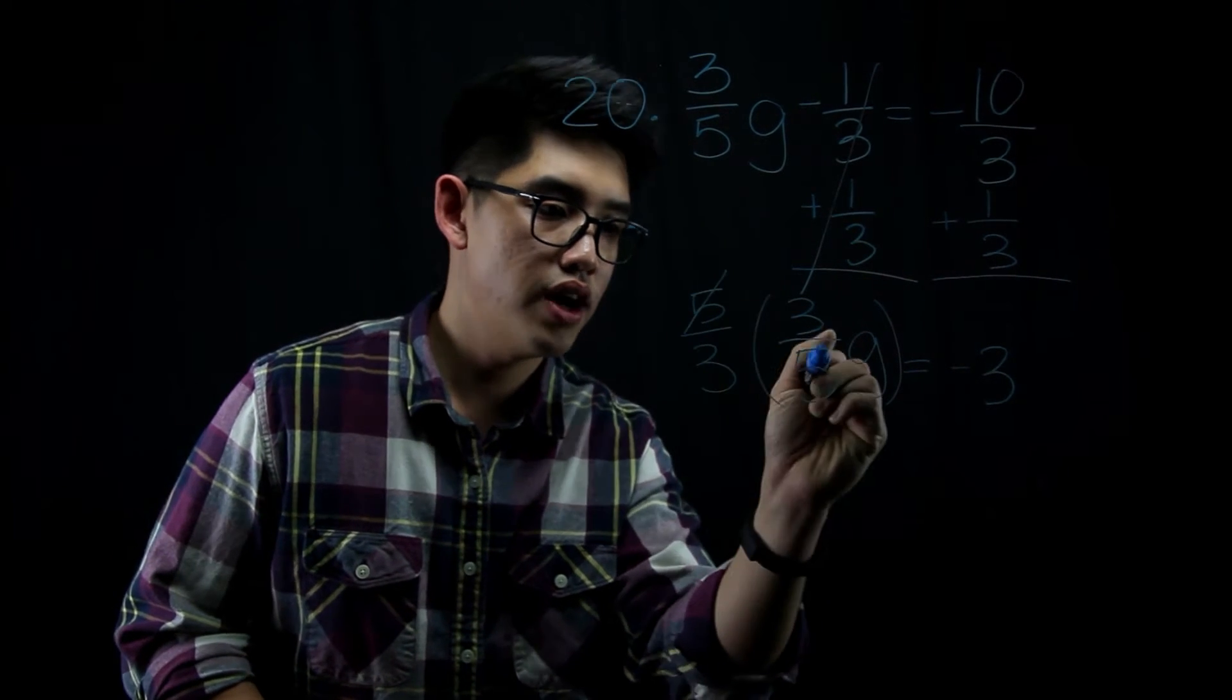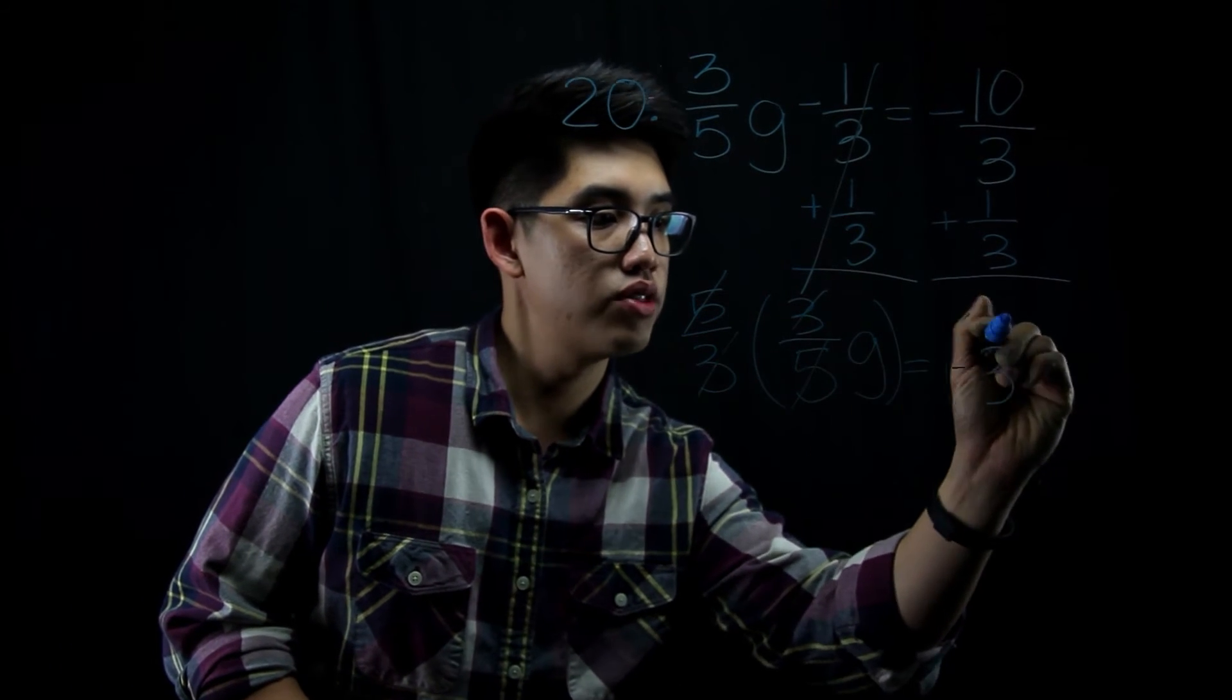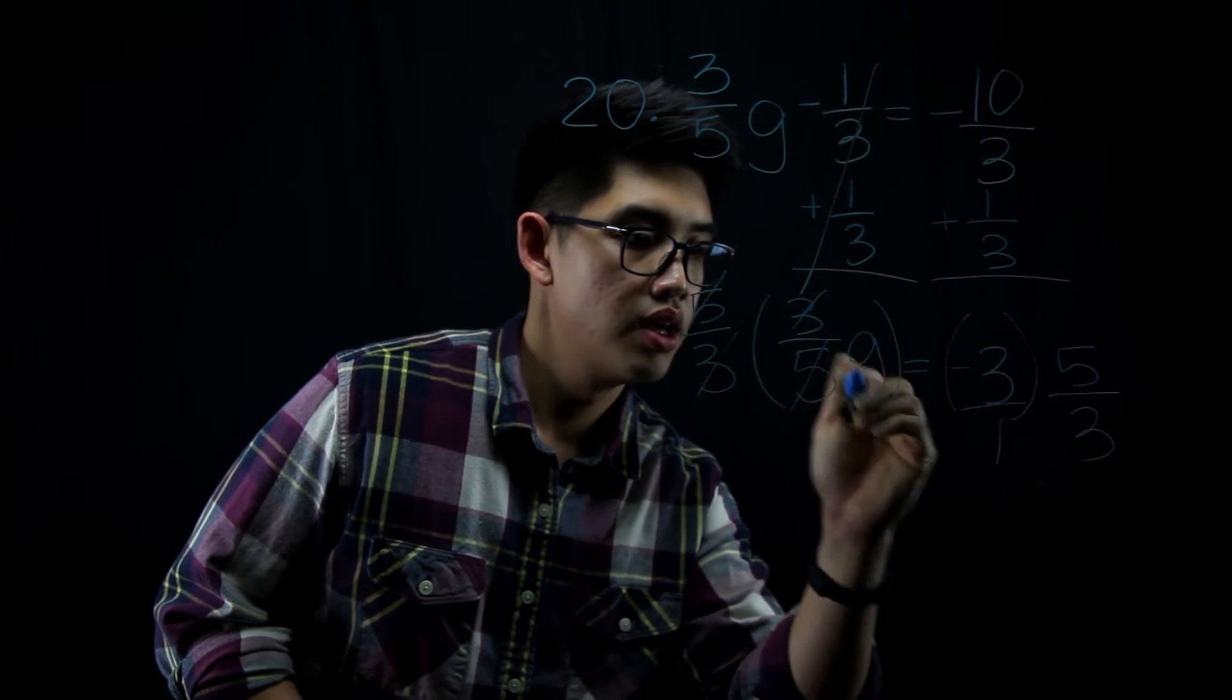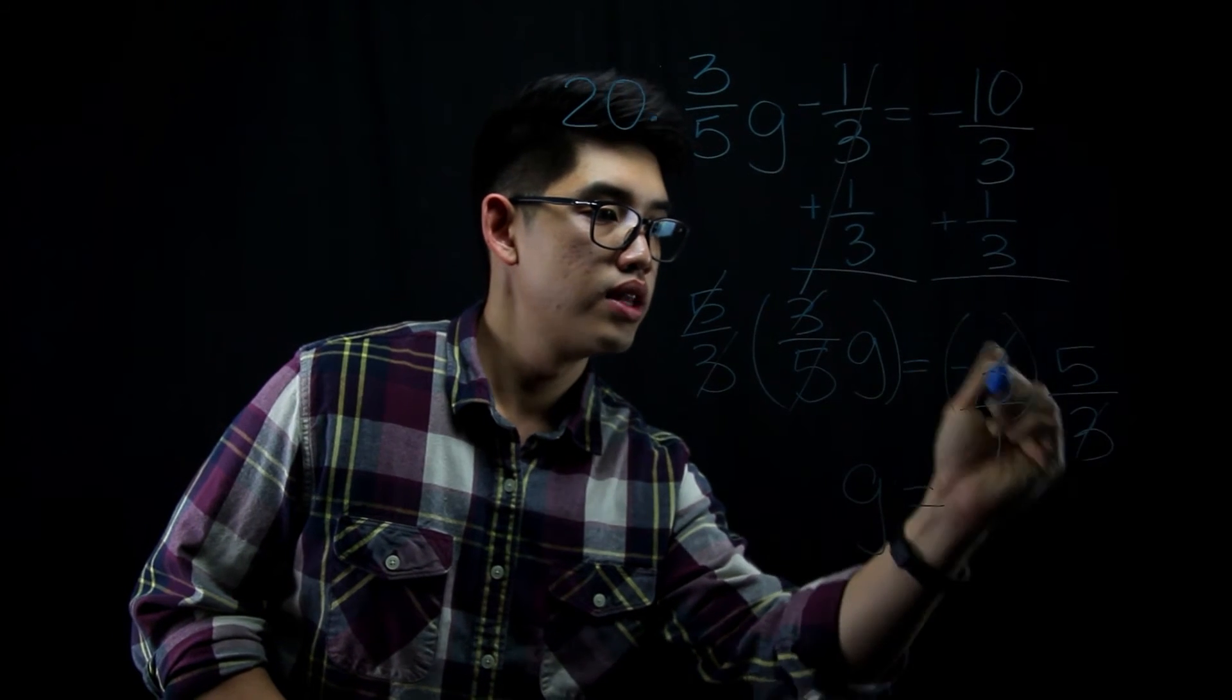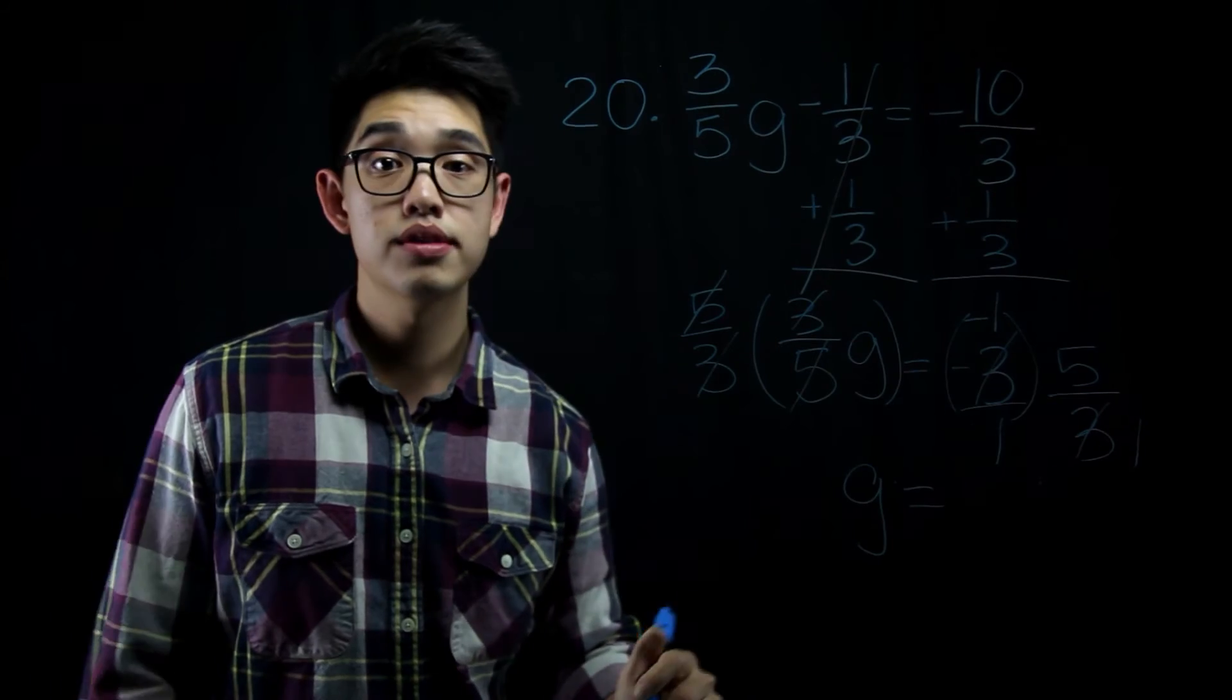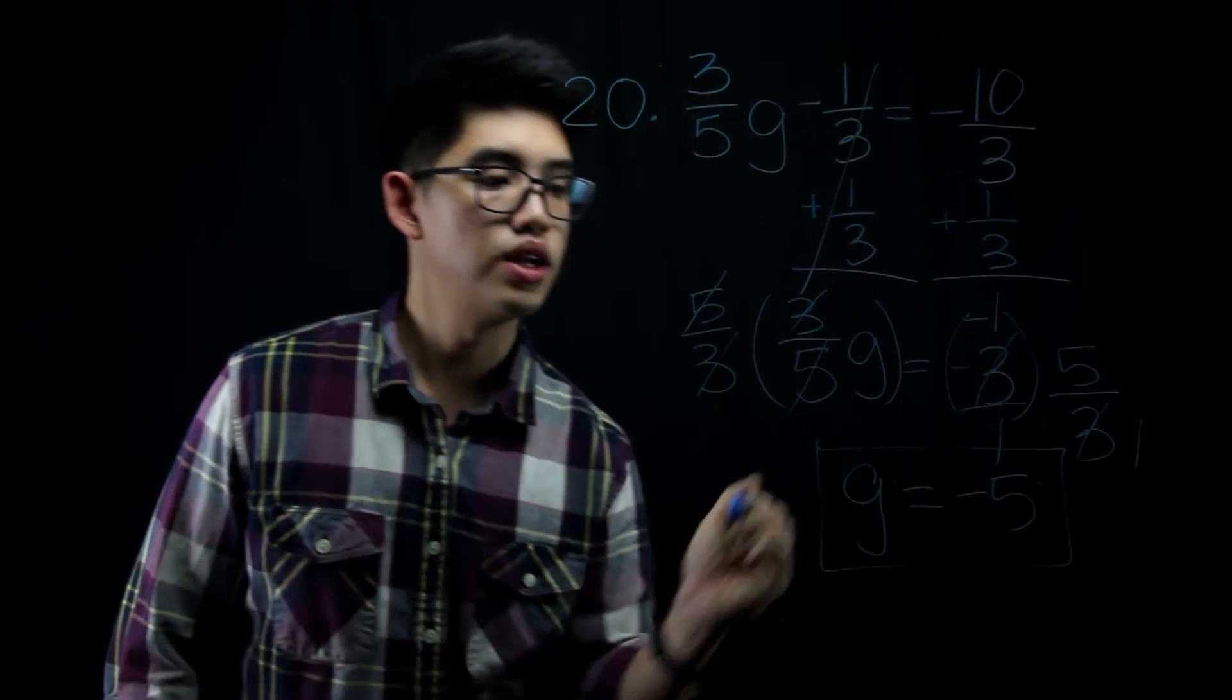This way, this 5 and this 5 can cancel out, and this 3 and this 3 can cancel out. If I multiply that side by 5 thirds, I've got to also multiply this side by 5 thirds. I'm going to get g equals, the 3 and the 3 will cancel out. That's going to be just a negative 1. Negative 1 times 5, that's going to be negative 5. My answer is g equals negative 5.